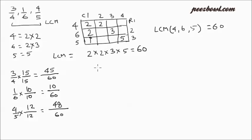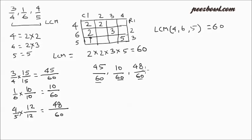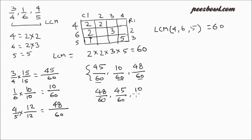Now rewrite the new values. So for 3 upon 4, we write 45 upon 60. For 1 upon 6, we write 10 upon 60. And for 4 upon 5, we write 48 upon 60. As we have 60 common in the denominator, it becomes very easy to find which fraction has the highest value based on its numerator. The fraction with the highest numerator value will be the greatest fraction. In this case, 48 upon 60 will have the highest value, then 45 upon 60, and finally the least value fraction will be 10 upon 60.